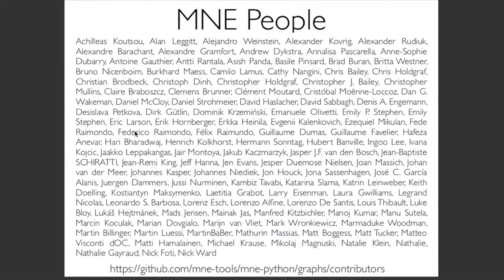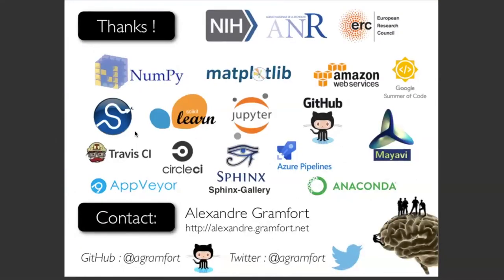These are the MNE people who have worked on this over the years. My concluding slides show logos of the funding agencies that have supported me at Martinos, in France, and in Europe, but also all the projects and companies — GitHub, Travis CI, Appveyor, Anaconda — that make this work possible. These are profit-oriented structures, but they contribute to the ecosystem and allow us to do what we do. I'm very happy about the tight links between academia and these industrial partners.